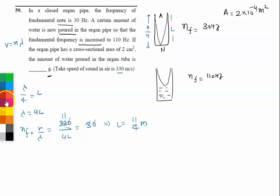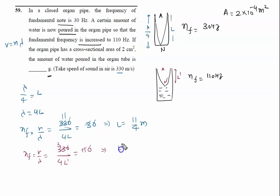Now in the second situation, this is antinode and this is node, and let this length be L'. Again applying the formula, frequency equals V by lambda: 330 divided by 4L' equals 110. We calculate L' as 3/4 meter.